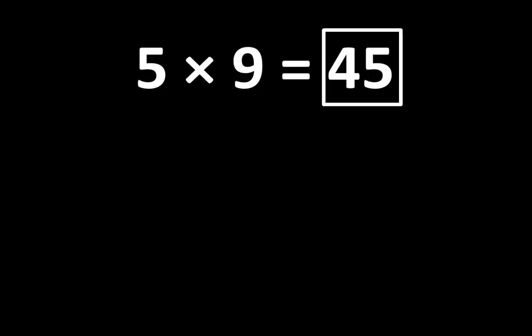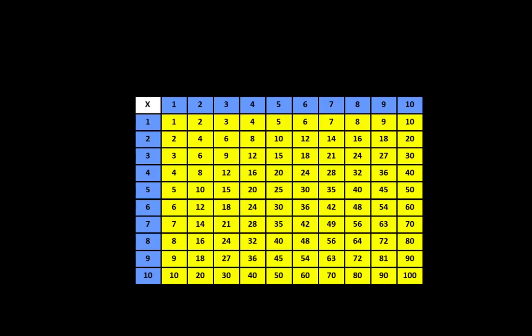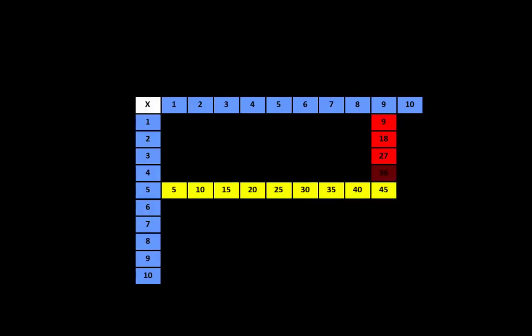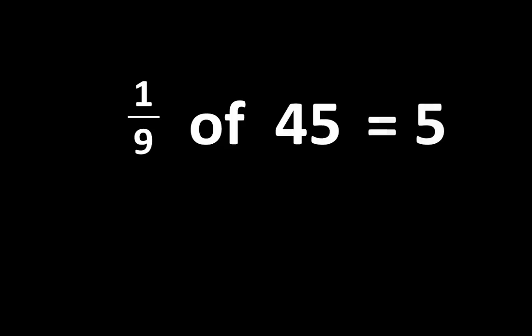If 5 times 9 equals 45, then on the multiplication table we know that 45 must be the 9th multiple of 5 and it also must be the 5th multiple of 9, which means that 1/9th of 45 equals 5 and 1/5th of 45 equals 9.